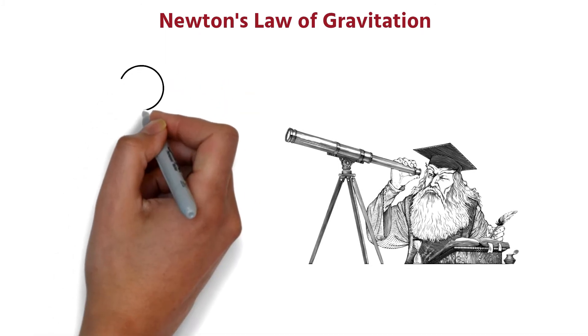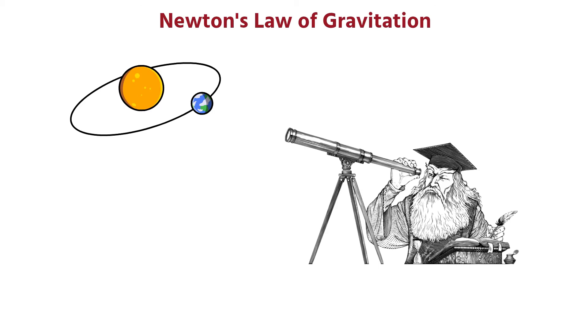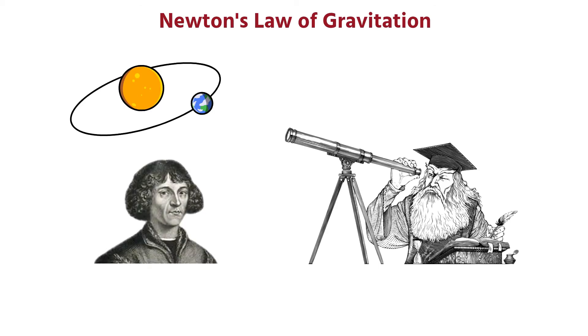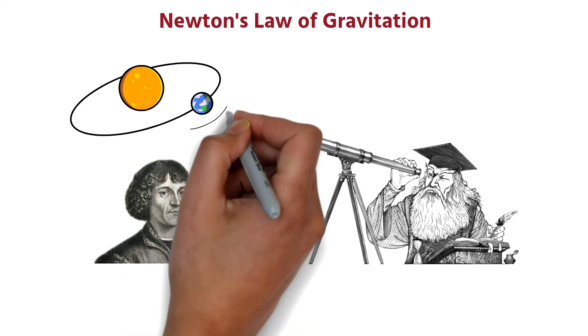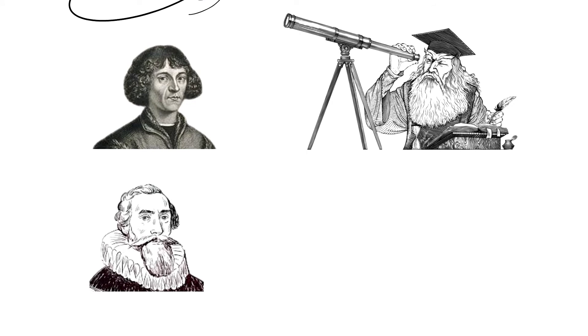Since ancient times, scientists have always been curious about planets, stars, and their motions. Nicholas Copernicus was the first to say that the Sun is stationary and the Earth revolves around the Sun. Later, the German scientist Johannes Kepler discovered three elegant laws of planetary motion, which are popularly known as Kepler's laws of motion.